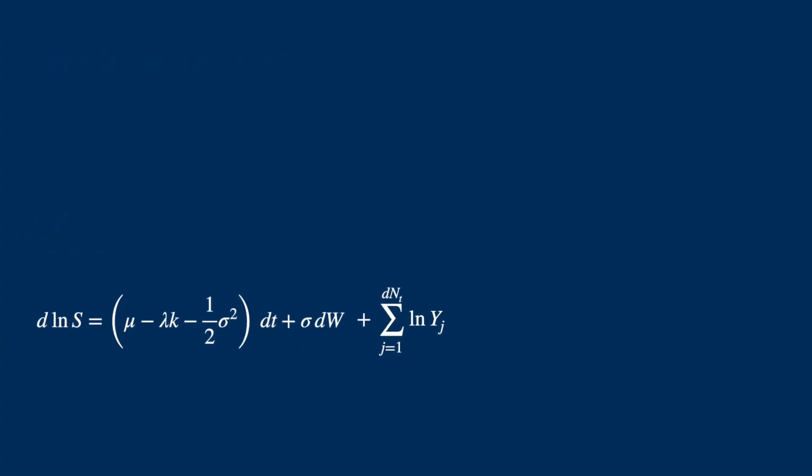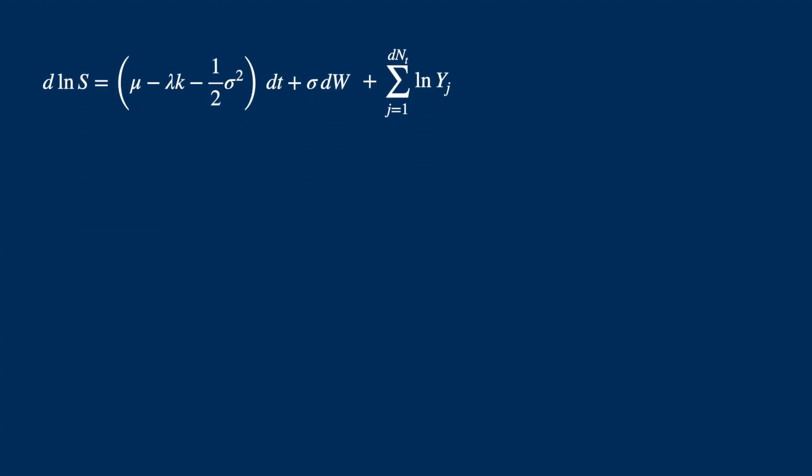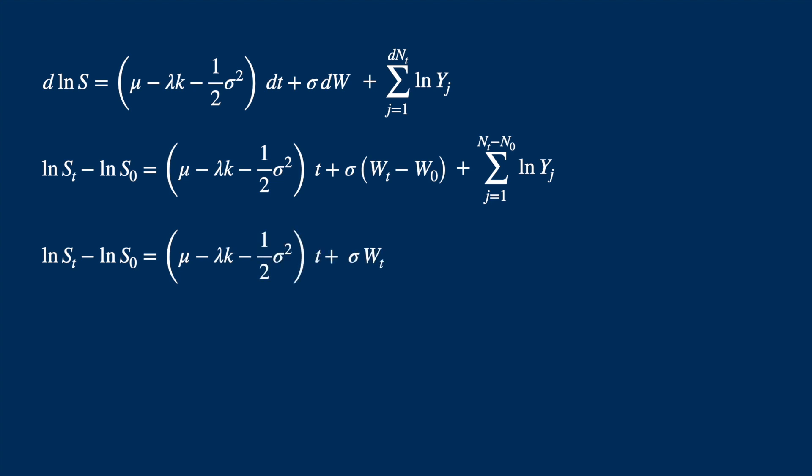Now let's integrate from 0 to t. Remember there are three terms that depend on t. This is the stock price S, W and N. Then W0 is equal to 0. And so is N0 by definition. This is because both the Brownian and the Poisson process start at 0.